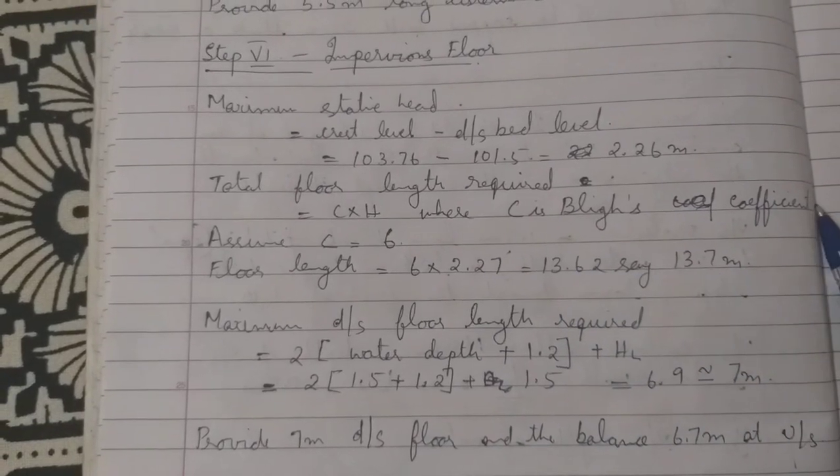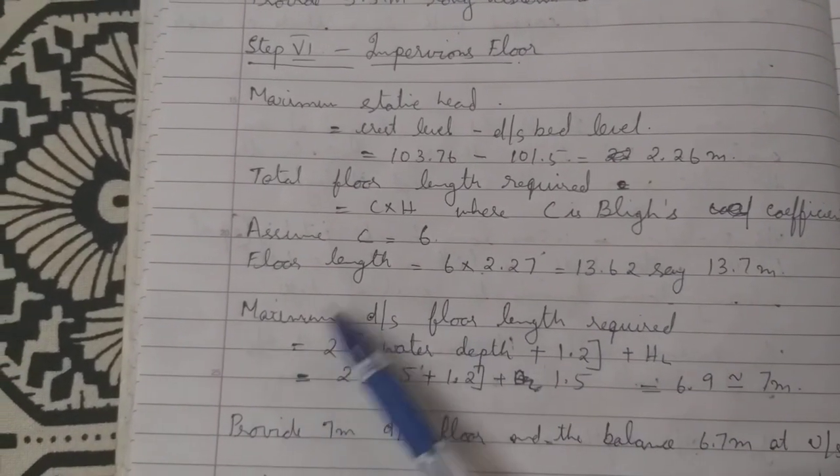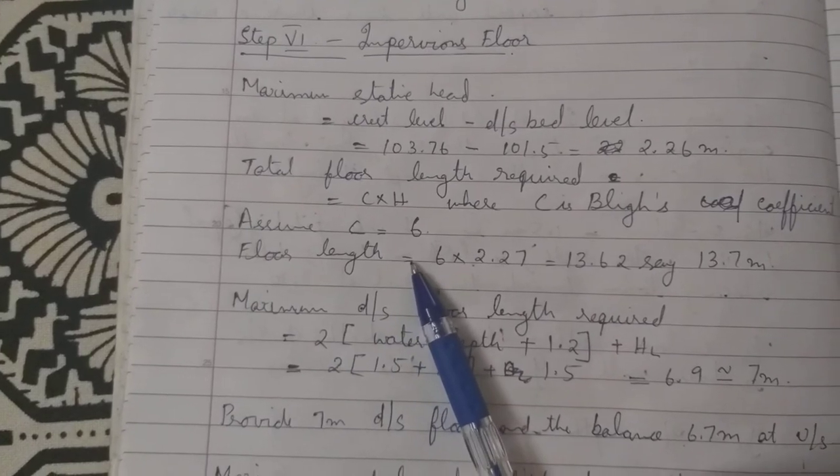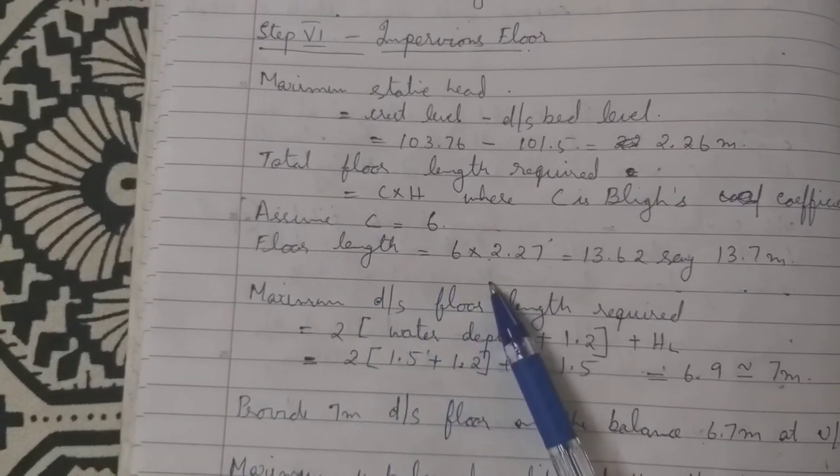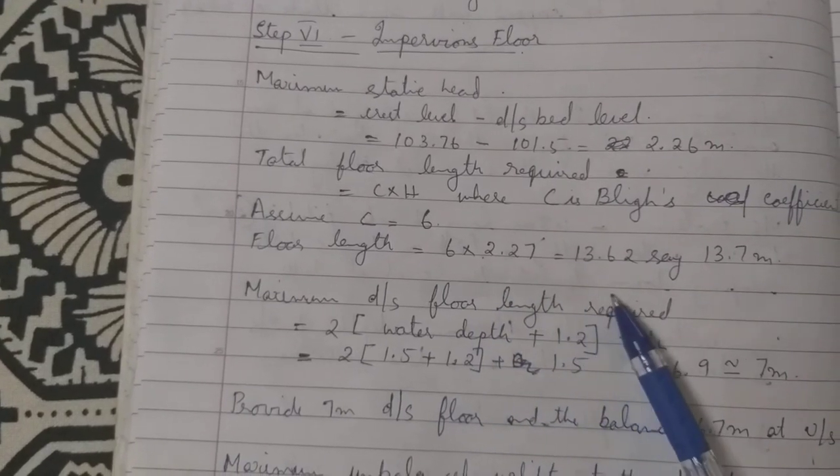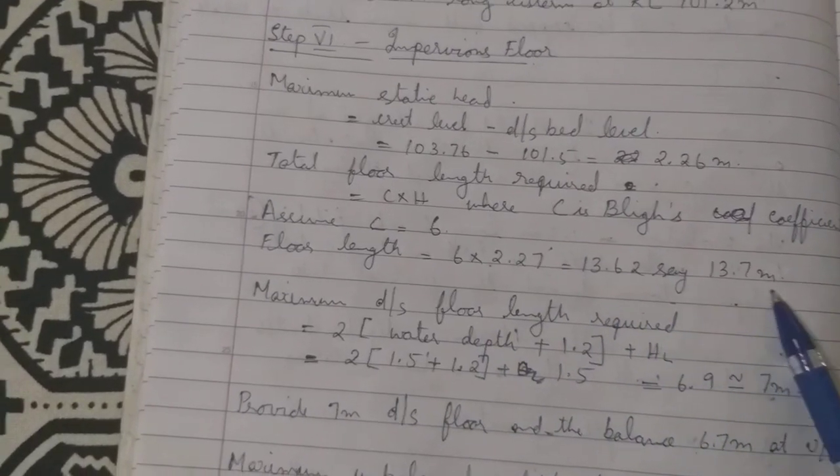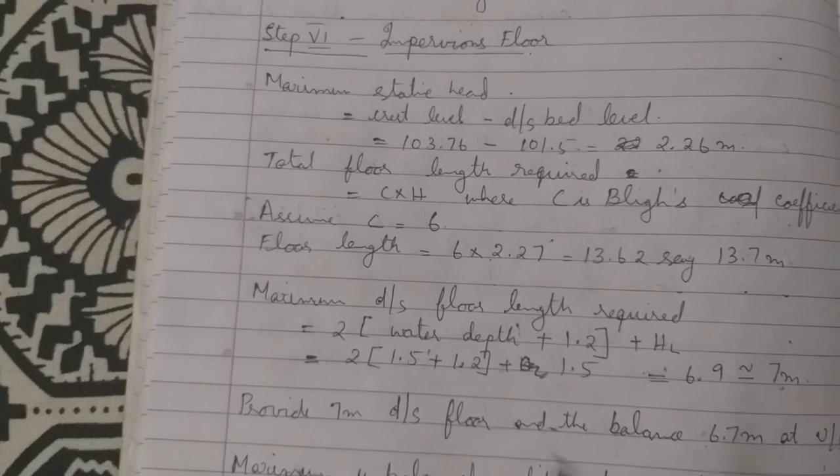As per the Blize theory, assume c is equal to 6, which is already given in the design. Floor length is equal to 6 into 2.27, which equals 13.62, say 13.7 meters.